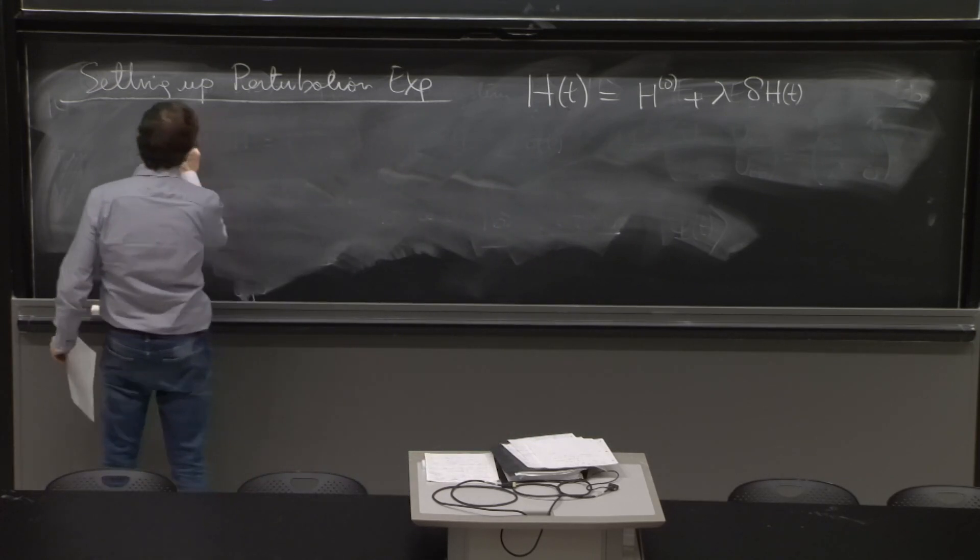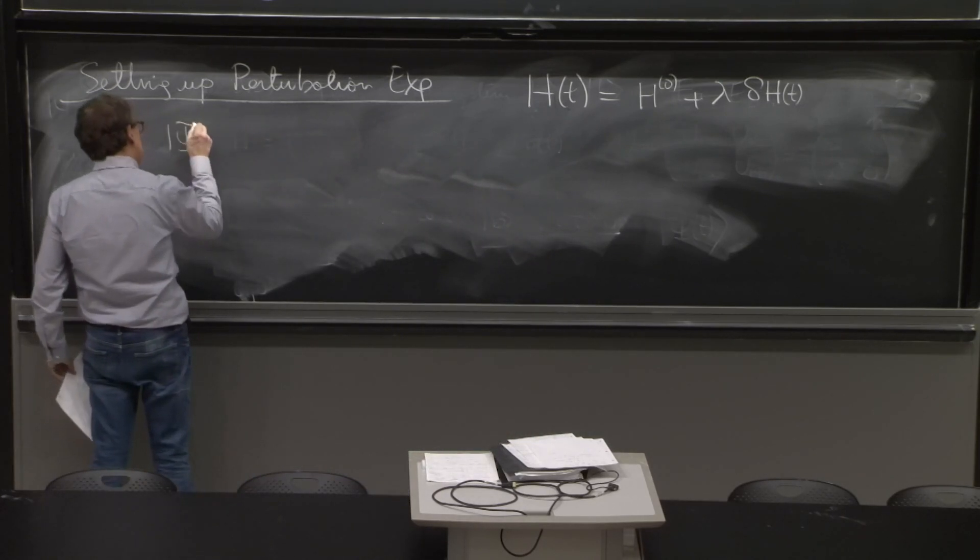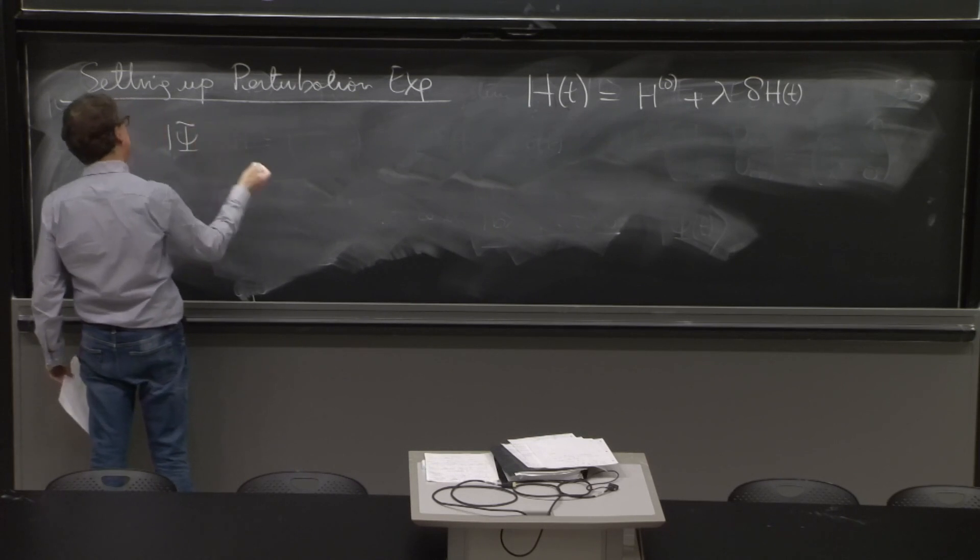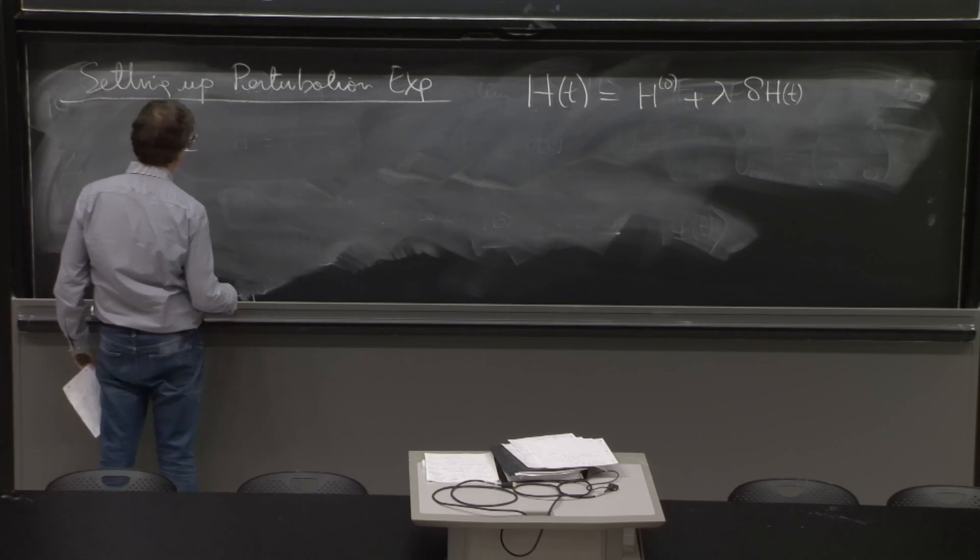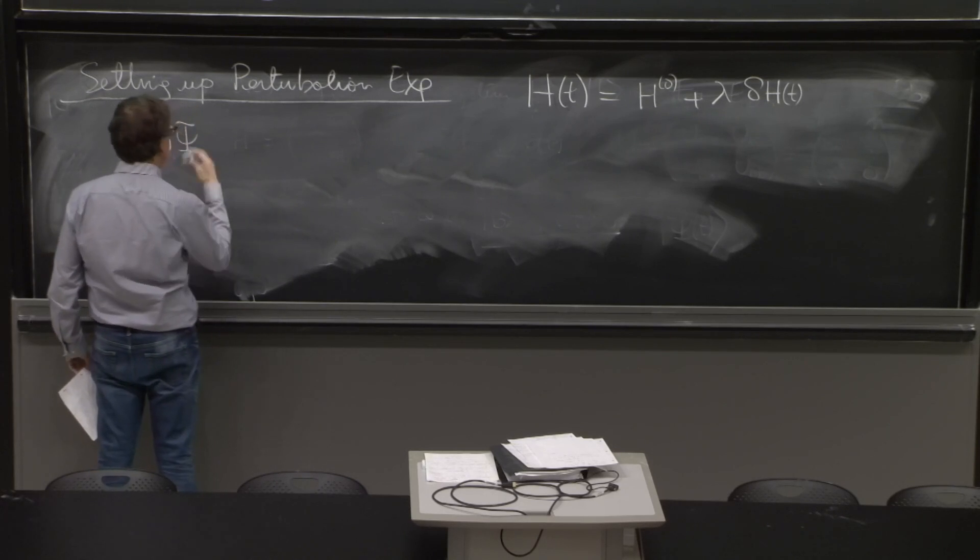We're going to work with the state psi tilde. You remember, if you know psi tilde, you put an e to the minus i H_0 t over h bar and you can get h.